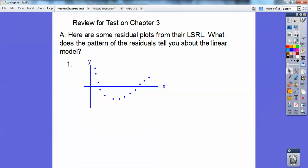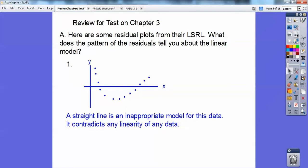What would you say about this residual plot right here about the linear model? Is this a good representation of a linear model? Well, certainly it's not. A straight line would be an inappropriate model for this data. It contradicts any linearity of the data. Obviously r doesn't look like it'd be close to 1 or negative 1 here, maybe more close to 50% or something. So it definitely wouldn't give you a nice straight line.